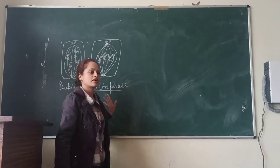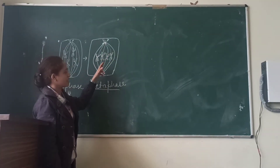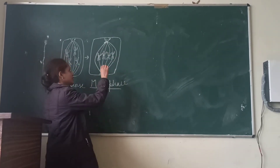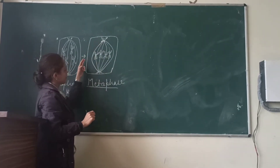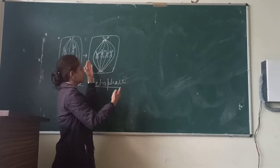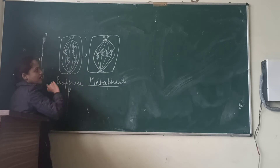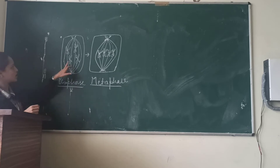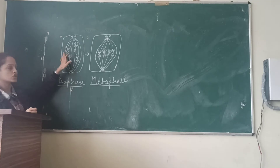The next phase is metaphase. In metaphase, all the chromosomes get arranged at the equatorial plate. The equatorial plate is exactly the midpoint of the spindle apparatus. The spindle apparatus has a convex shape, so the widest part of the spindle apparatus is the midpoint.